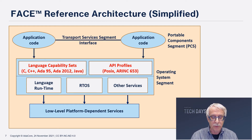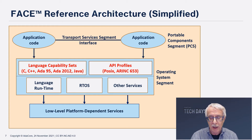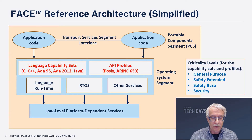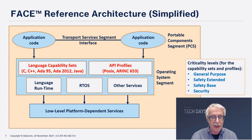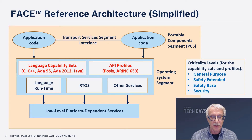A PCS component will need some runtime services, such as threading support or memory management. It's not allowed to directly invoke functions from the target RTOS, since that would defeat portability. Instead, it needs to either invoke functions from a standard API — in particular POSIX or ARINC 653 — or else use the relevant features from specified standard programming languages. Moreover, different PCS components might be at different assurance levels depending on safety or security requirements. So the FACE technical standard defines POSIX and ARINC 653 API subsets, known as profiles, corresponding to different levels of assurance. The most restricted is the security profile, and then, at increasing generality, come the safety base, safety extended, and general purpose.